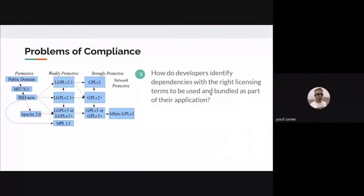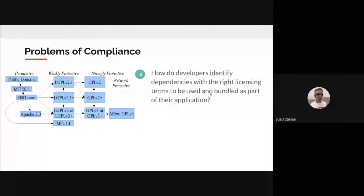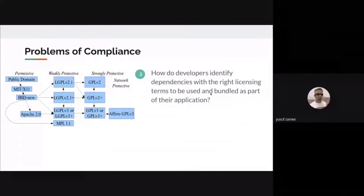The third problem is the problem of compliance. Suppose the user has selected the best available package at a version with no vulnerabilities. In an application, you'll be using many such packages, and each will have its own licensing compliance. There are different versions of licenses — permissive, weakly protective, strongly protective, network protective — and different licenses under each. Whether those packages are compliant with each other, whether there are conflicts, and what the overall license of your project should be — this is the third problem.